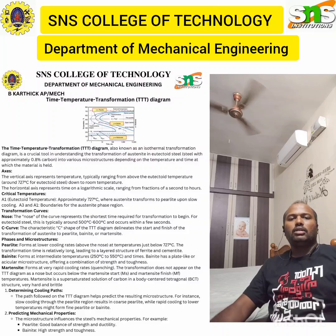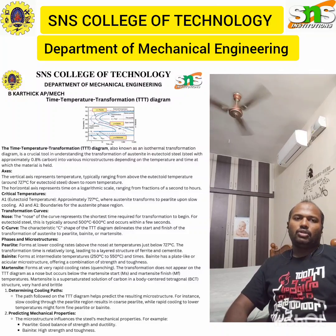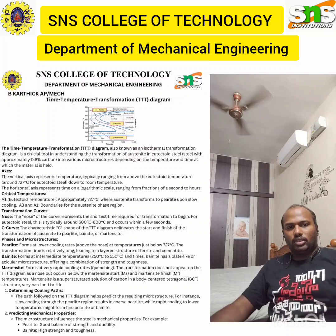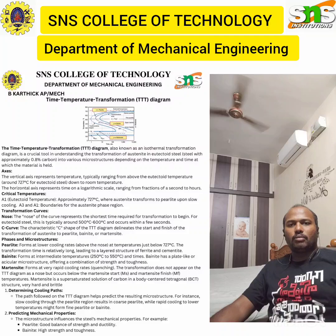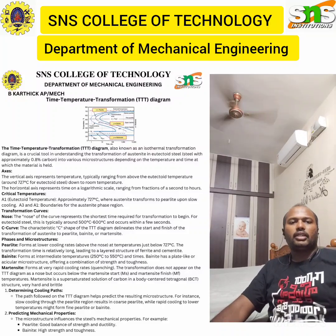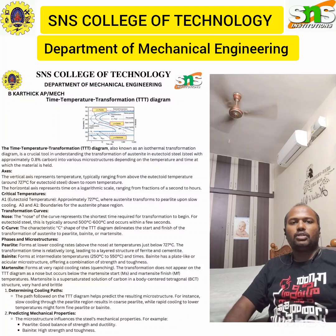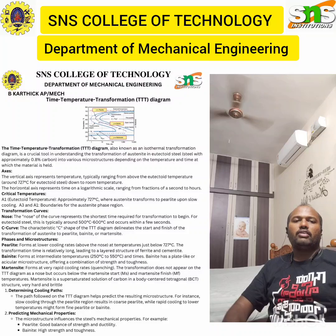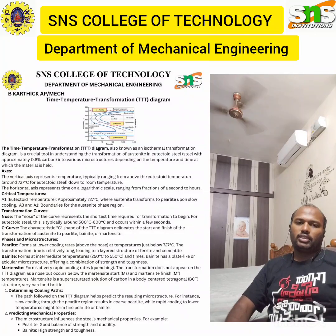In the transformation process, the first step is austenitization — heating the steel above the eutectoid temperature to form a homogeneous austenite. The second step is isothermal cooling, where the steel is cooled rapidly to an isothermal temperature within the range specified on the TTT diagram to observe different transformations. The third step is quenching — cooling at a rate faster than those indicated on the TTT diagram to form martensite.